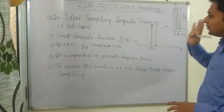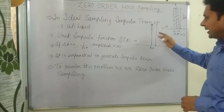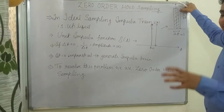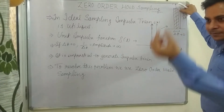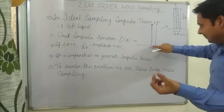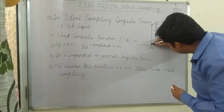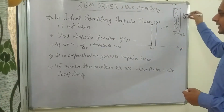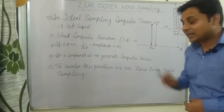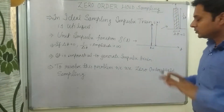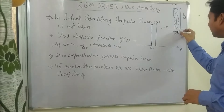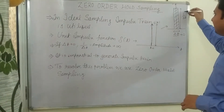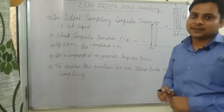By definition of the unit impulse function, the area under this pulse is one. If we magnify it, it looks like a rectangular pulse with some width delta on the time axis and amplitude 1/delta. The area of this pulse is width times length, so if the width is delta, the amplitude must be 1/delta.